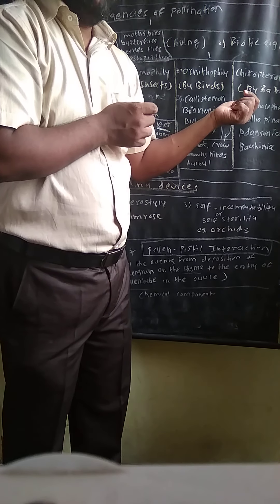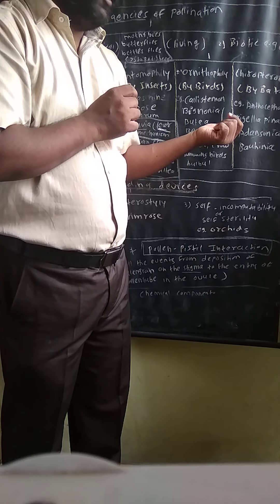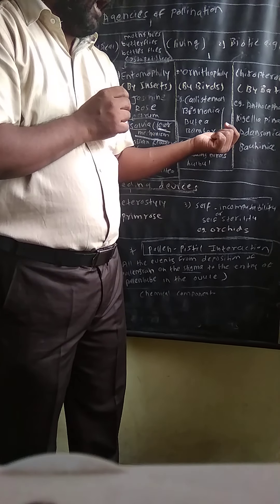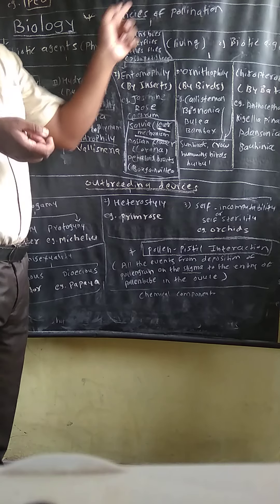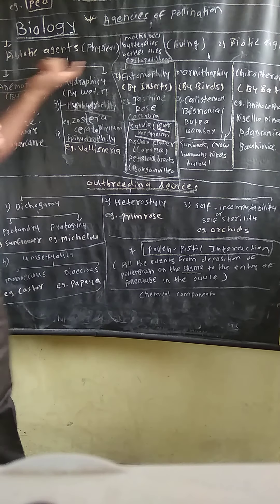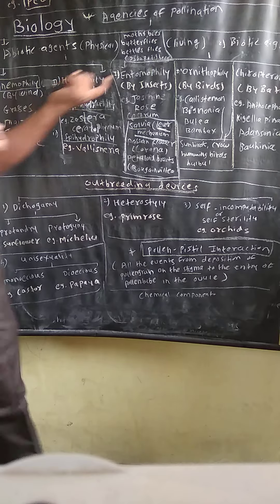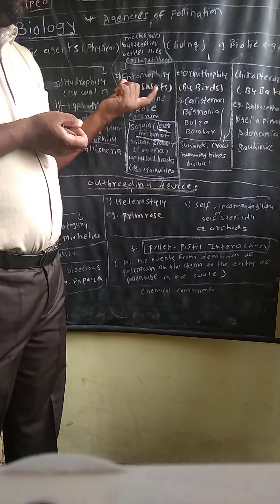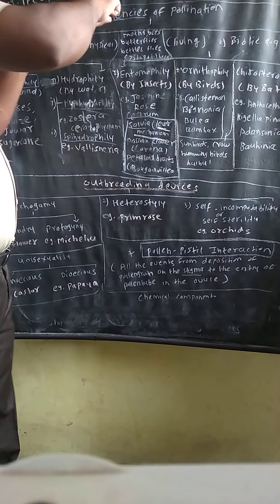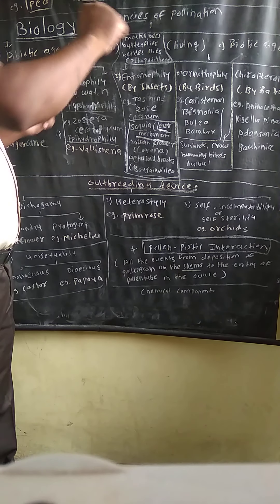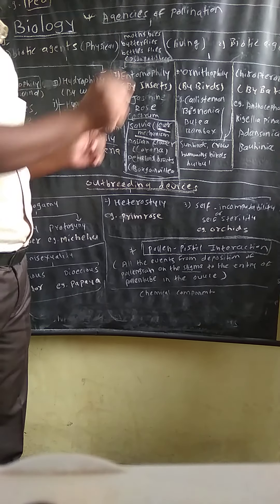Examples of chiropterophilous plants are Anthocephalus (commonly called Kadam), Kigelia pinnata, Adansonia (Gorakshins), and Bauhinia. To summarize: abiotic agencies include anemophily by wind and hydrophily by water. Biotic agents include entomophily by insects, ornithophily by birds, and chiropterophily by bats. Write down the total chart in your notebook and practice the examples, as they are very important for seed examination.